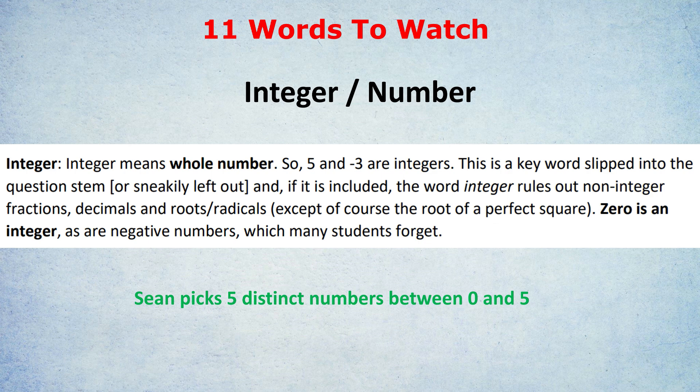As a quick example here, Sean picks five distinct numbers between zero and five. Well, based on what I said earlier, you know distinct means different. So each of the numbers has to be different. But also they said number, not integer. Some of you asking for five distinct numbers between zero and five would say, oh, the numbers have to be, I don't know, one, two, three, four, five. There you go. But no, they said number, not integer. So the five distinct numbers could be 0.2, 0.5, 1.2, 1.7, 1.8, for example. They don't have to be integers because they use the word number. Watch out for that.